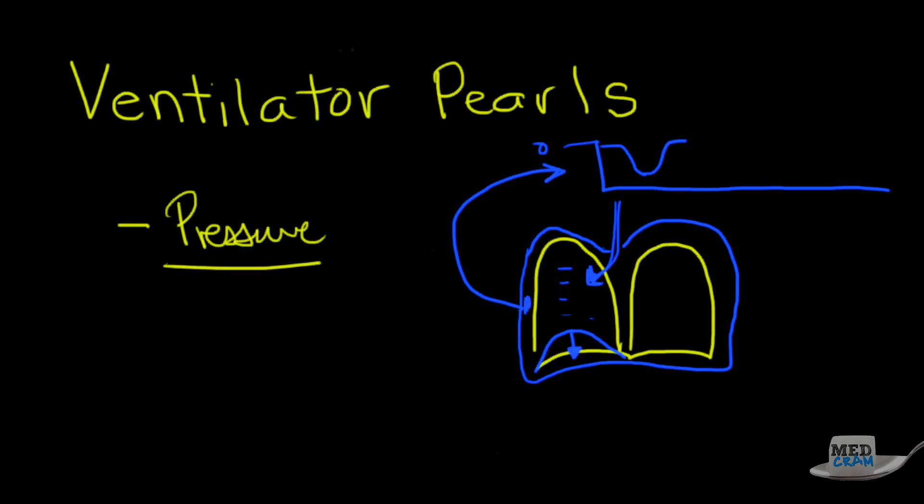In the situation where you have positive pressure ventilation, so you're putting someone on a ventilator, just the opposite happens. You're at a neutral level here, and then the ventilator goes ahead and pushes air, not sucks but pushes air into your lung, and that's going to make a positive pressure in that pleural space. So you can see here that when you put someone from spontaneous breathing on a ventilator, they're going to go from negative pressure ventilation to positive pressure ventilation.